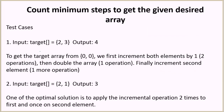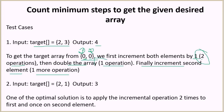Let's look at a few examples. In the first test case the target array is [2, 3] and the output is 4. We start with [0, 0]. We increment both elements by 1 — that counts as two operations. Then we double the array, making it [2, 2] — one operation. Finally we increment the second element — one more operation. Total: four operations.